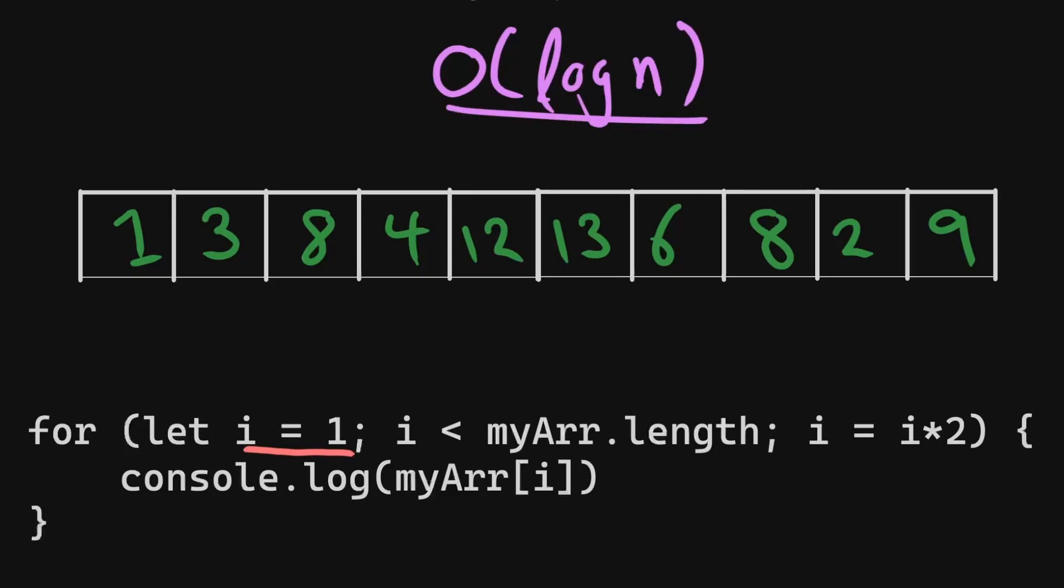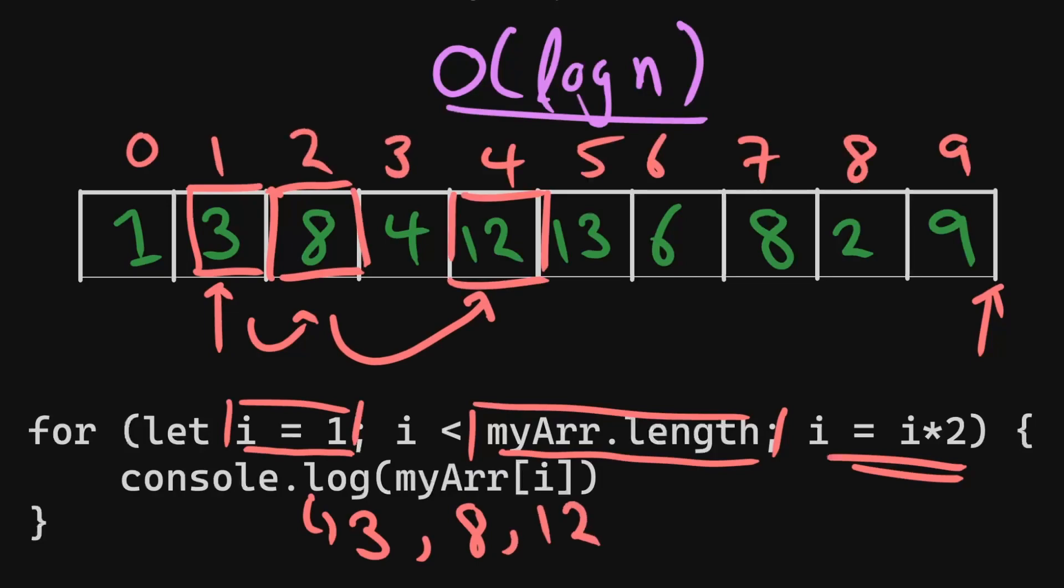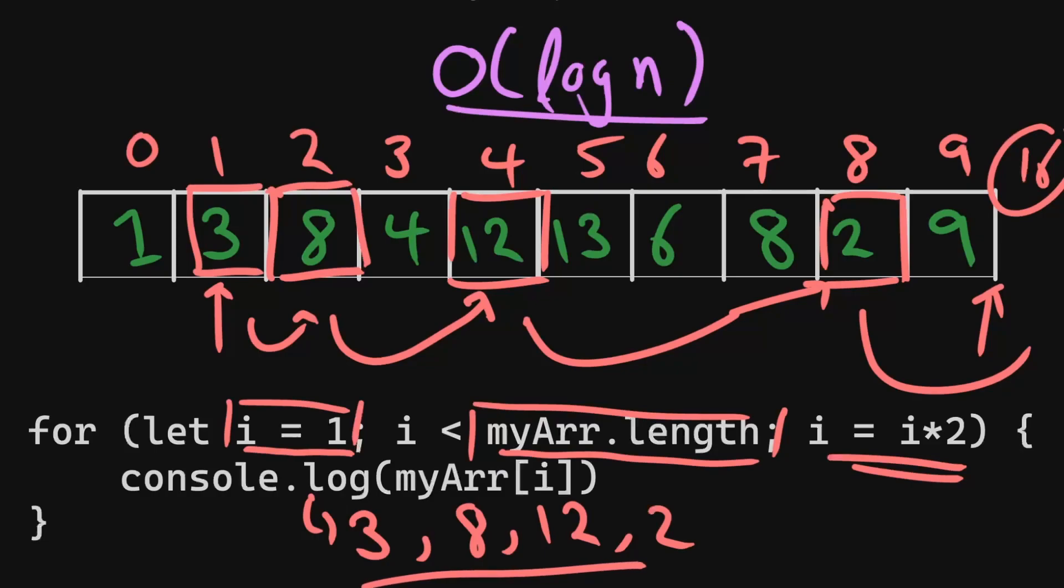So the first example, we have a for loop where it starts at i equals one. So we're starting here because this is zero indexed, and it ends at my array length, so it ends over here. And on every step, we are multiplying i by two. So for the first step, we'll be printing three because we start here, and then we multiply i by two, so we end up here. So then we print eight, and then we multiply i by two again, so we're at four. So we print twelve, and then we jump all the way over to eight, which will give us this, and then the next jump will be completely out of bounds. So the only things we'll be returning are these four values.